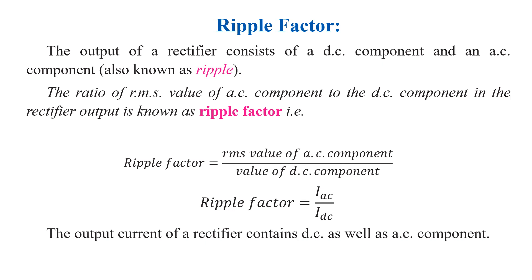This is represented mathematically as I_ac divided by I_dc, where I_ac is the RMS value of the AC component present in the output current of the rectifier. The output contains both DC and AC components and is not pure DC — pure DC can be obtained by using filters, which are not discussed here.